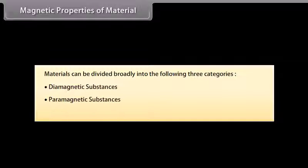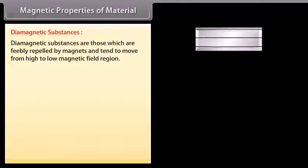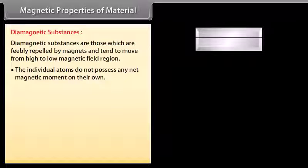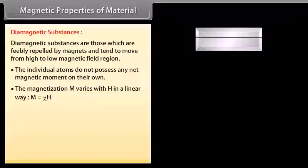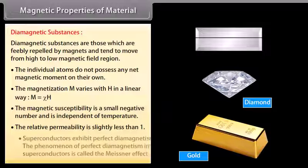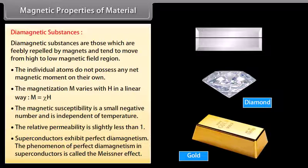Materials can be divided broadly into three categories: diamagnetic, paramagnetic, and ferromagnetic substances. Diamagnetic substances are those which are feebly repelled by magnets and tend to move from high to low magnetic field regions. Individual atoms do not possess any net magnetic moment. Magnetization M varies linearly with H: M = xi·H. The magnetic susceptibility is a small negative number and is independent of temperature. The relative permeability is slightly less than 1. Superconductors exhibit perfect diamagnetism, a phenomenon called the Meissner effect.